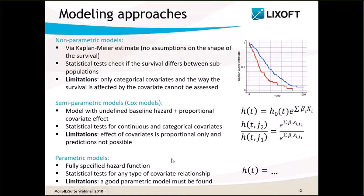Finally, parametric models require specifying fully the hazard function. If a good model can be found, statistical tests are more powerful than for semi-parametric models. The model can depend on parameters with inter-individual variability estimated with a population approach, and there is no restriction on how covariates affect the hazard. Parametric models can also be easily used for predictions. So the parametric approach is more difficult but also powerful, and this is the approach used in Monolix.